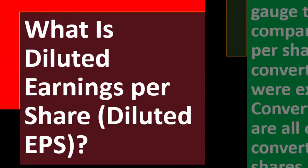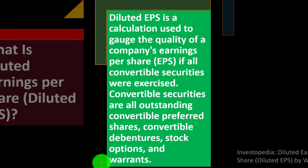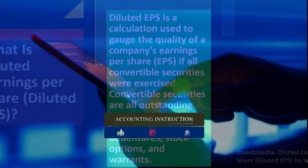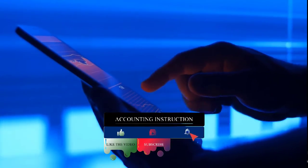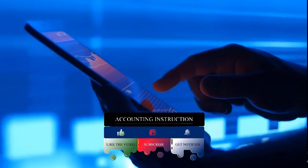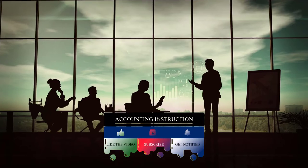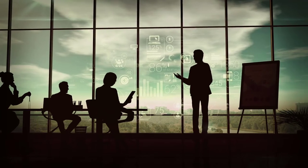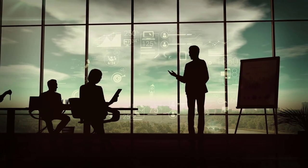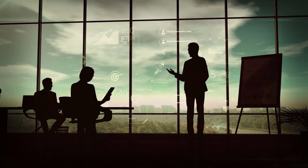Diluted earnings per share is a calculation used to gauge the quality of a company's earnings per share if all convertible securities were exercised. We're talking about the stock side of things when doing an analysis of diluted EPS, remembering that stock represents ownership in a company — a separate legal entity whose ownership is broken into equal units. We're usually talking about publicly traded companies trading on an exchange.